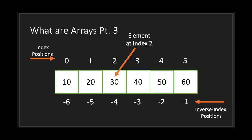A value inside an array is called an element, and the position in the array is called an index position. The index position starts at zero for the first element, one for the second element, and continues like that.